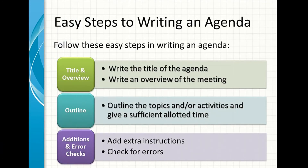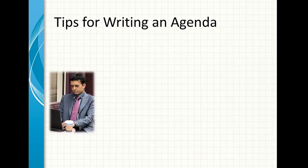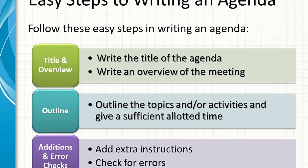Easy steps to writing an agenda. Follow these easy steps: write the title of the agenda, write an overview of the meeting, outline the topics or activities, and give a sufficient allotted time. You can add extra instructions, then make sure you check for errors.